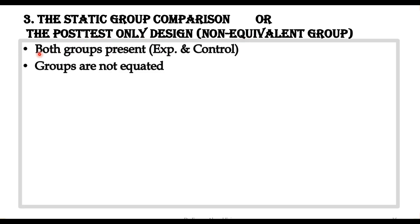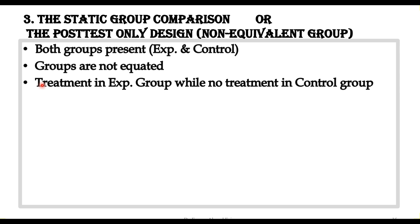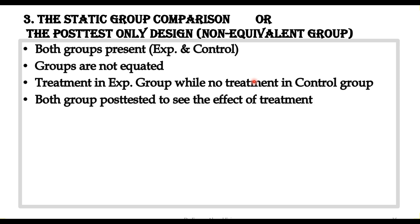The first feature is that both groups are present — the experimental group and the control group. Although we have two groups, these groups are not equated and therefore are called non-equivalent groups. This means the groups are not equal based on their abilities, demographic variables, or other attitudes or performance measures we are interested in. The treatment is given in the experimental group while there is no treatment in the control group.